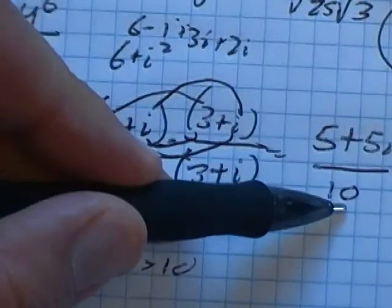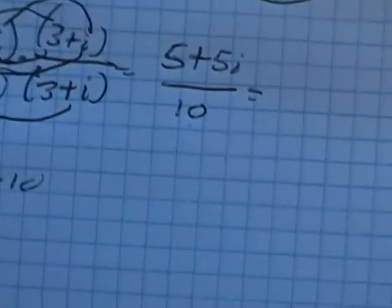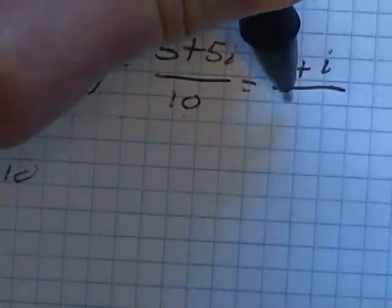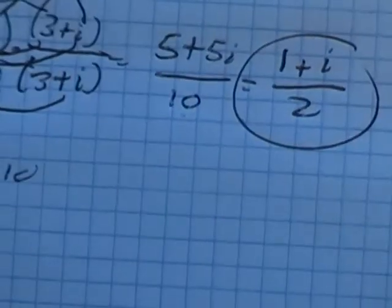Now notice these are all divisible by five, so I've divided everything by five. To simplify this, I end up with one plus one i over two.